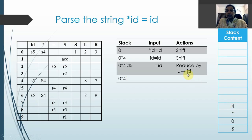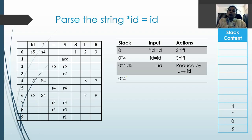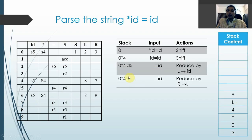After popping, we have state 4 on top. The id is replaced by the left-hand side of the production — that is the reduction. So id is removed and L is pushed in its place. Now with state 4 on L, the goto entry gives us state 8. So we push L and state 8 onto the stack.